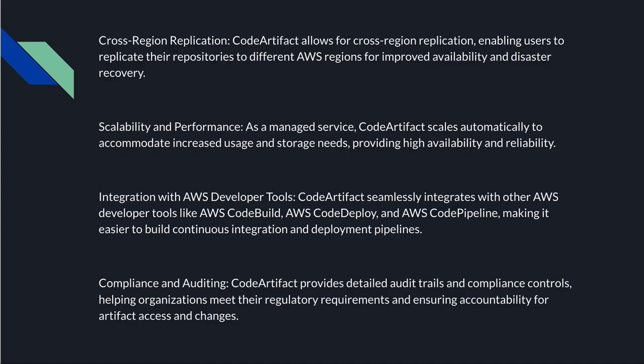Next is integration with AWS developer tools. Code Artifact seamlessly integrates with other developer tools like AWS CodeBuild, CodeDeploy, and CodePipeline. Even if you are not using the full AWS suite — if you use GitLab, Jenkins, or other CI/CD tools — you can still use Code Artifact as an artifact repository for storing your packages and reducing download time. This makes it easier to build continuous integration and deployment pipelines.